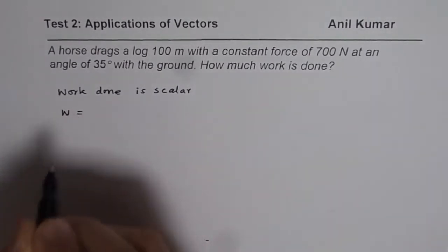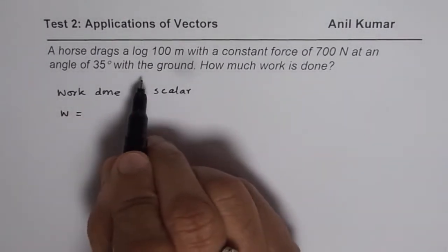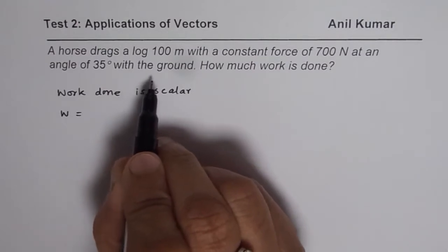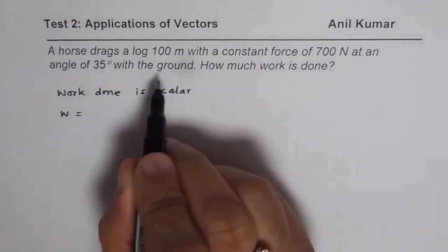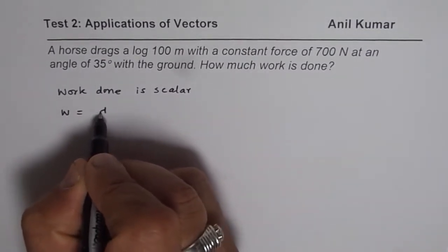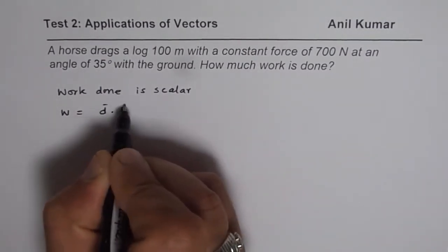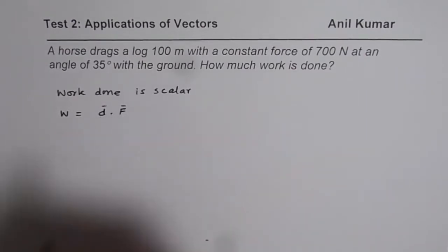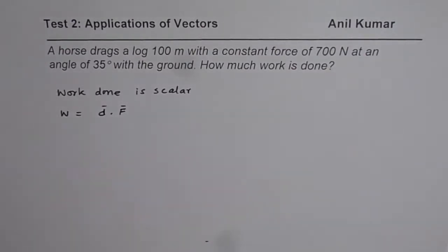So work done equals the dot product of displacement, which is vector, times dot product of displacement and force. So it is dot product of displacement D dot force F. These are the two vectors. When you find the dot product, you actually get work done.